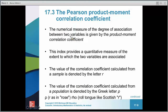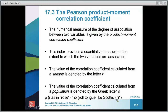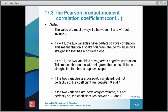The Pearson Product Moment Correlation Coefficient is the full title. Whenever we're dealing with a sample, it's known by the Roman numeral R — which we saw on the calculator. If it's the population, we use the Greek letter rho. We will spend most of our time calculating R, and most of the formulas you'll see will have R.